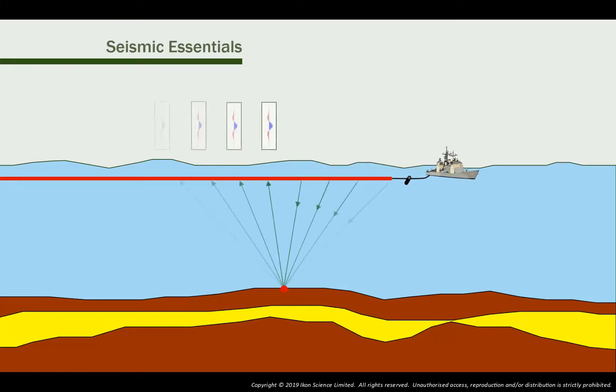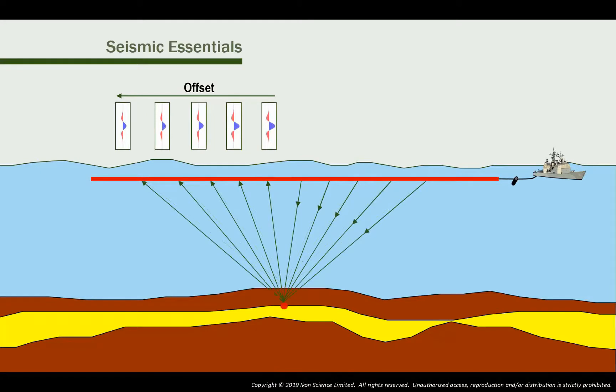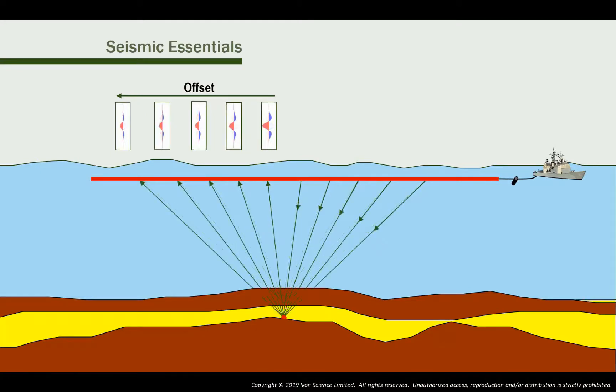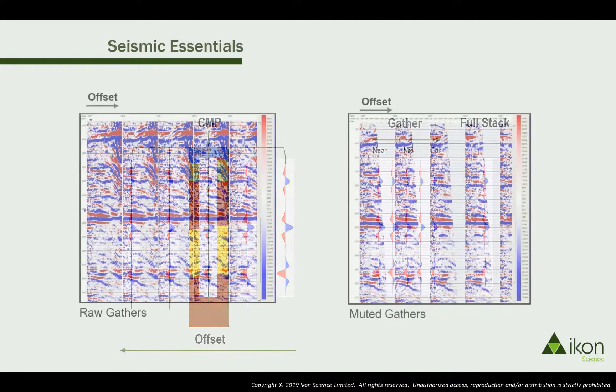Cycling the same point in the subsurface from multiple angles allows us to observe how the amplitude changes with offset. Points at different depths but with a common geographical location and equal offset are then assembled into vertical traces before being grouped together in a seismic gather.